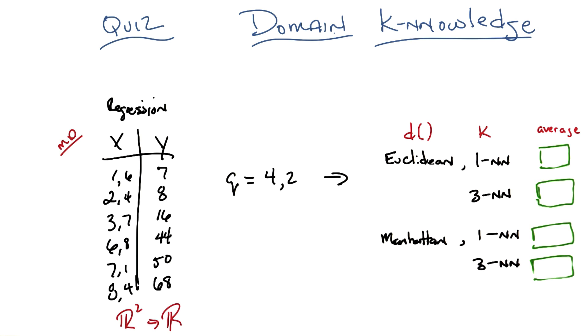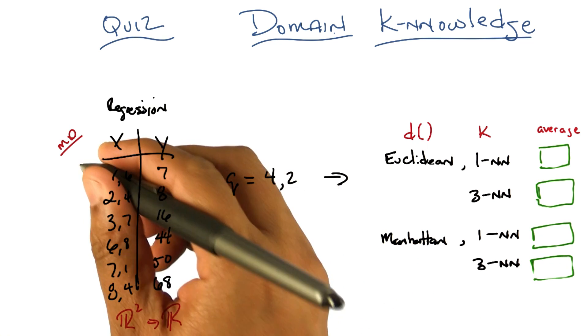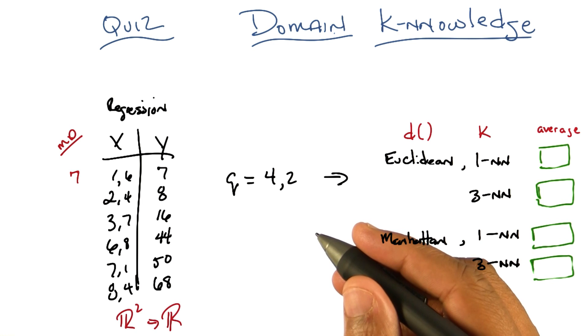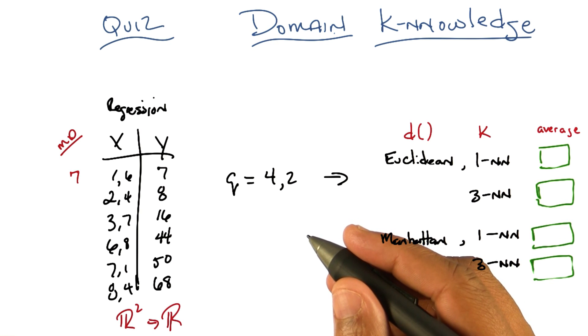So the first one, what you do is you take the 1 minus 4, and that's 3. And you take the 6 minus 2, and that's 4. And you add those two together, and you get 7, which, interestingly, is the same as Y, but I think that's a coincidence. Okay, so Manhattan distance is 7. Yeah, and now I'll do all the rest of them, because I pre-computed them.